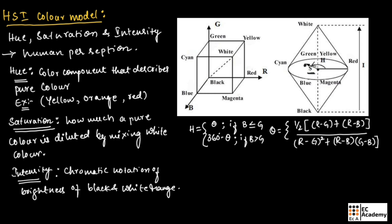Saturation can be represented as 1 minus 3/(R+G+B) multiplied with the minimum value of R, G, B.